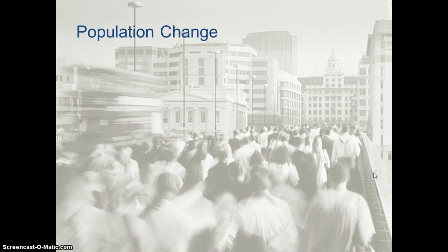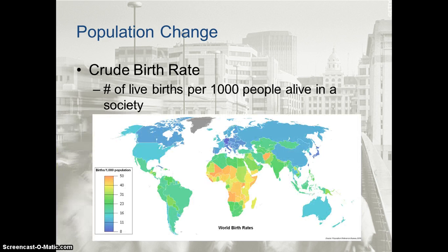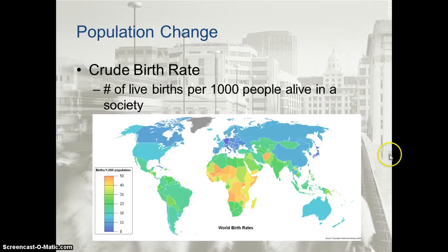Another part of demography is population change, which can be looked at through the crude birth rate. The crude birth rate (CBR) is the number of live births per 1,000 people alive in any given society — a CBR of 20 means that for every 1,000 people in a country, 20 babies are born over a one-year period. A world birth rate map for 2009 shows that in many parts of sub-Saharan Africa over 50 babies were born per 1,000 people, whereas in parts of Europe and North America the crude birth rate was much lower.